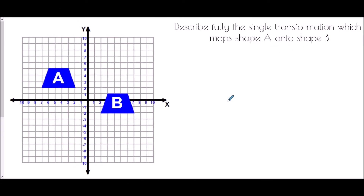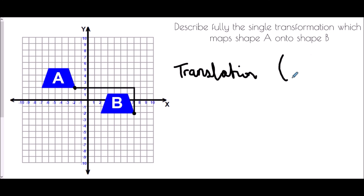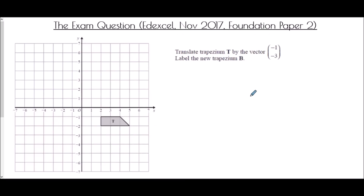Describing the next single transformation going from shape A to shape B: take the same corner on each shape — the bottom right this time — and draw straight lines to decide how it has moved. It's two, four, six, eight, nine to the right and four down. The shape has moved so it's a translation. It's moved nine places to the right, which is a positive x change, and four spaces down, which is negative four in the y direction. Vector: nine on top, negative four below.